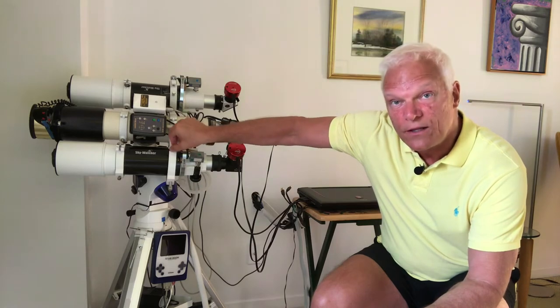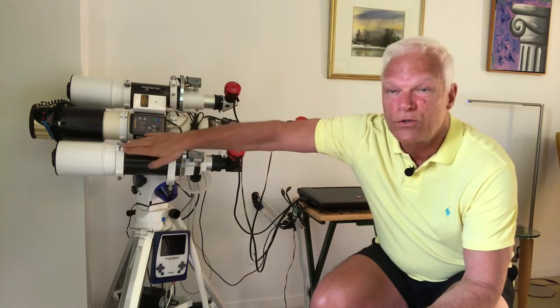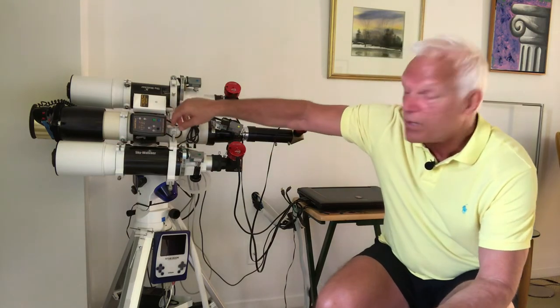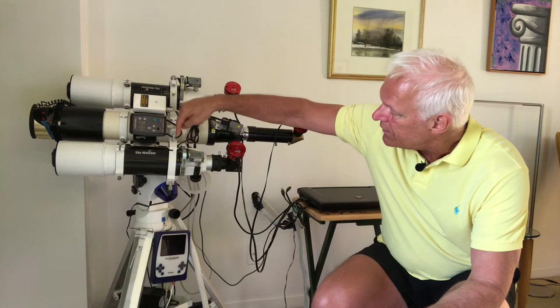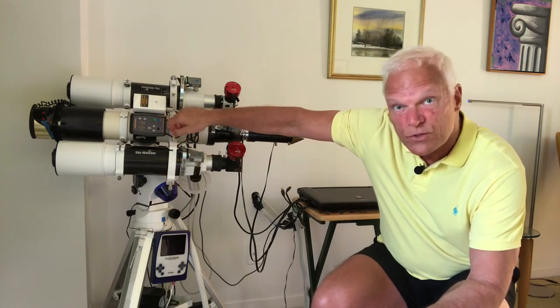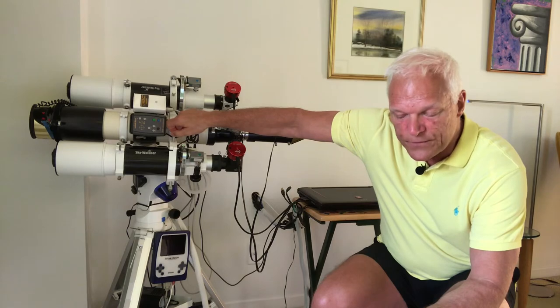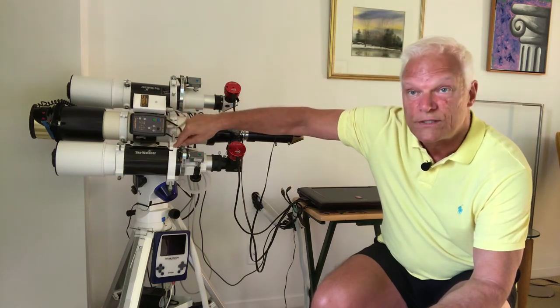Number six, I bought larger tube rings for these two telescopes here. Before the tube rings were four inch adapted to the size of the tube. I bought six inch tubes and what I did is I added, I pierced them in three places and added long thumb screws with delrin tips.